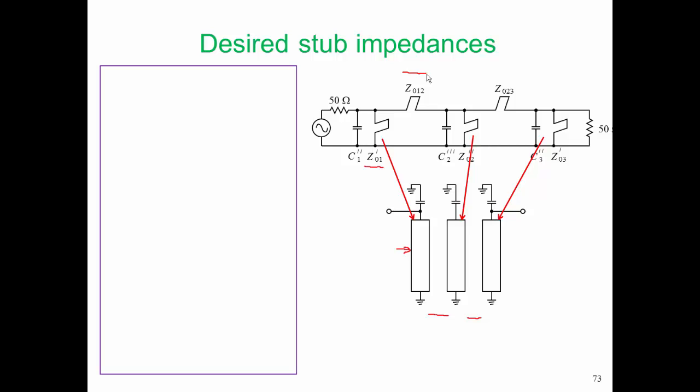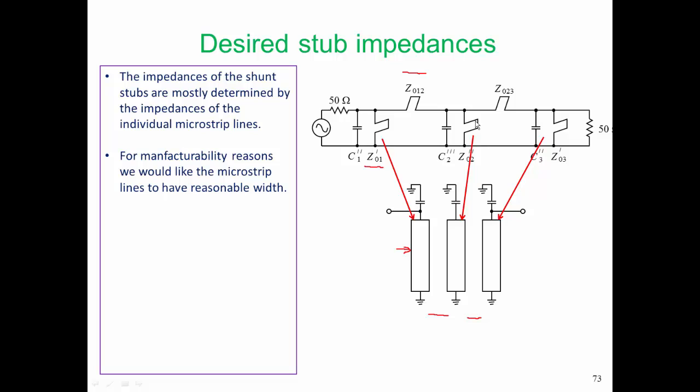Because of that, we know that we want the characteristic impedances of our shunt stubs to be in the manufacturable range of characteristic impedances for our individual microstrip lines. For manufacturability reasons, we would like the microstrip lines to have reasonable width, and on alumina, we want these characteristic impedances to be between 30 ohms and 80 ohms.